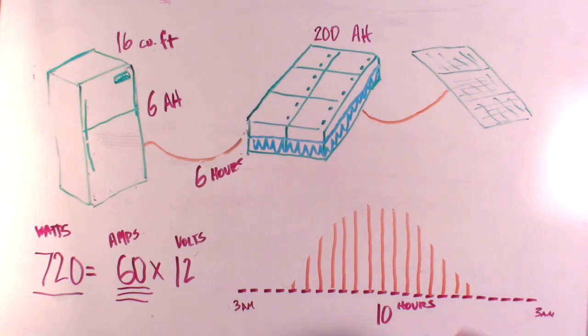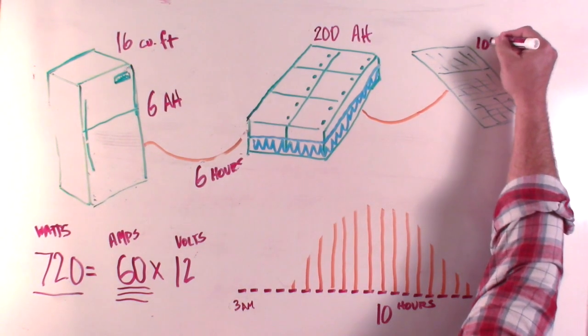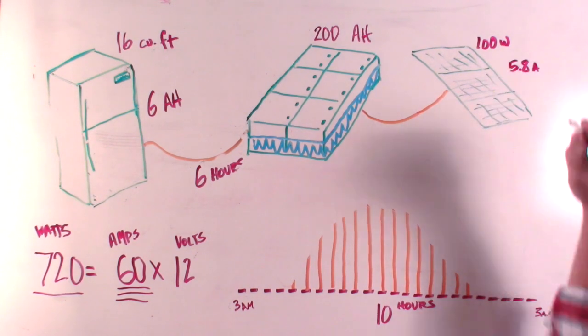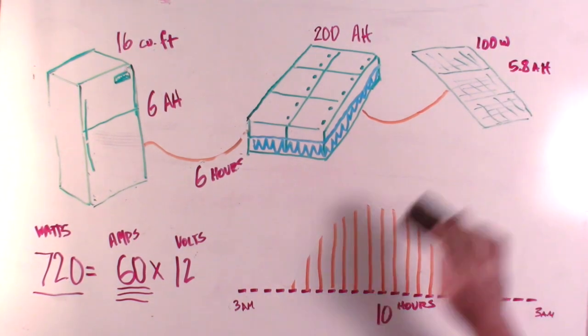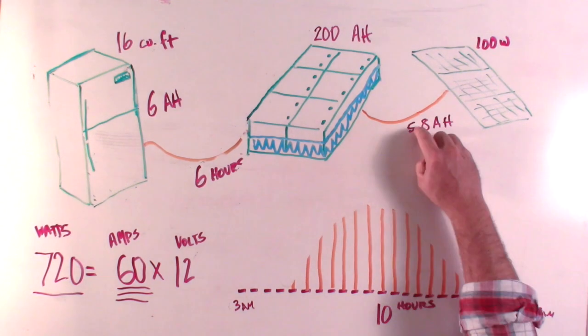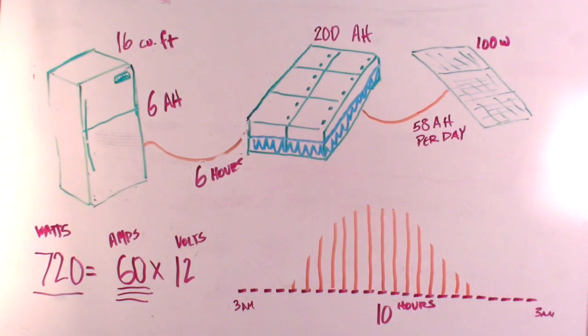And we're assuming here that these panels are 100% efficient, which they're not. And they're aimed perfectly at the azimuth angle of the sun, which they won't be, but let's pretend anyway. And let's say we're working with 100 watt solar panels, since they're the most common. The popular Renogy panels, which are super efficient, add back about 5.8 amps per hour to a 12 volt system.